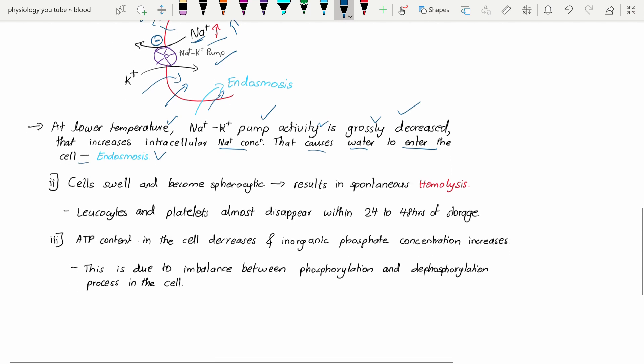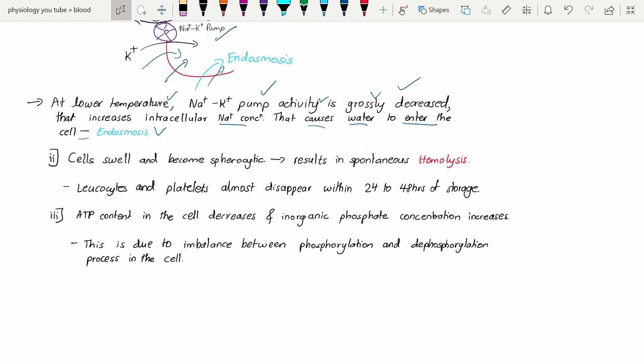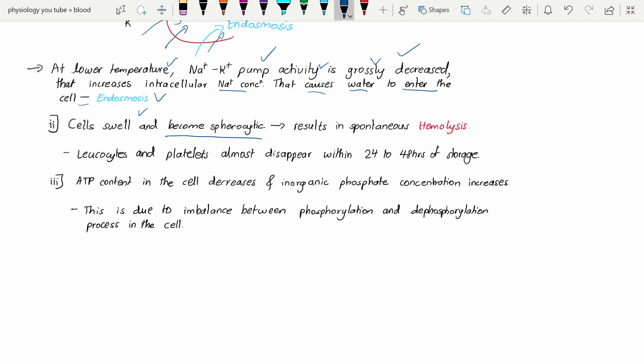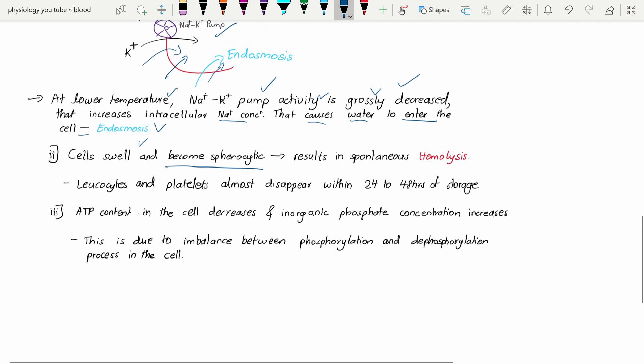The second change is that cells swell and become spherocytes. This results in spontaneous hemolysis. As you know, we can't store blood for more days because sodium keeps getting accumulated. Water enters, RBCs turn round and spherocytic, and then gross hemolysis occurs.